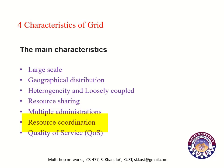Number seven: resource coordination. Resources in a grid must be coordinated in order to provide aggregated and combined computing capabilities and storage resources. Number eight: quality of service. A grid must assure the delivery of services under established quality of service requirements.